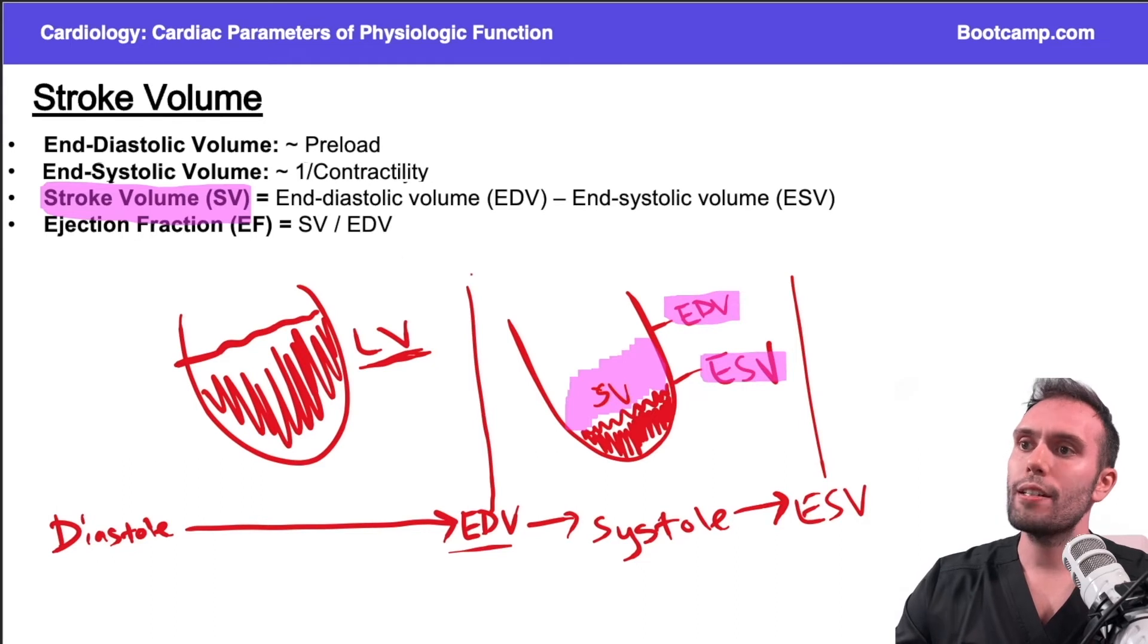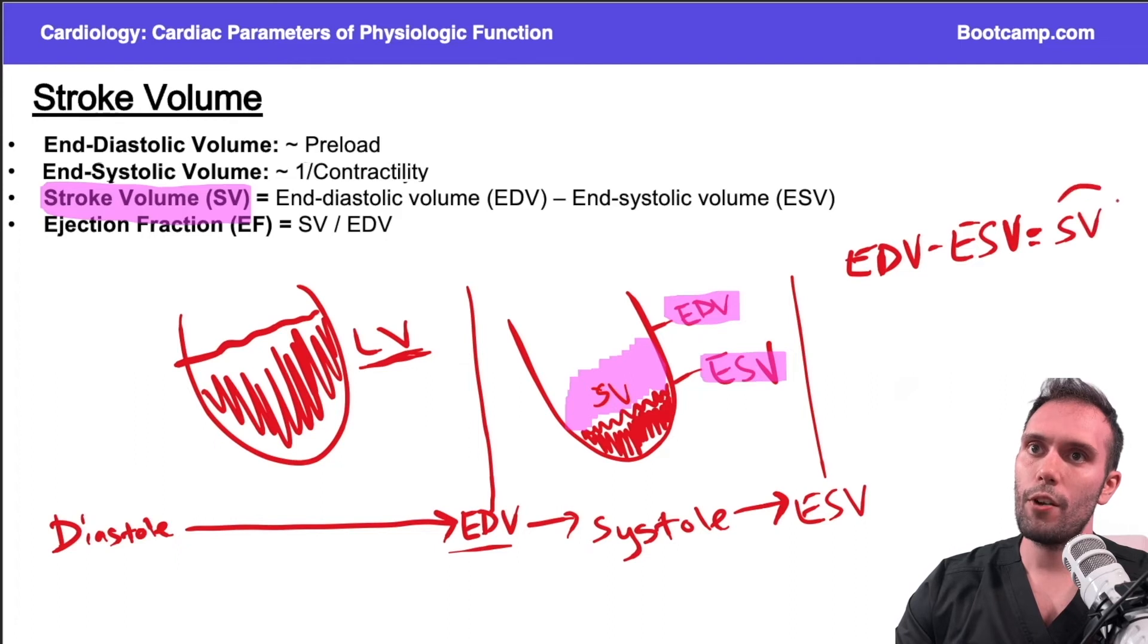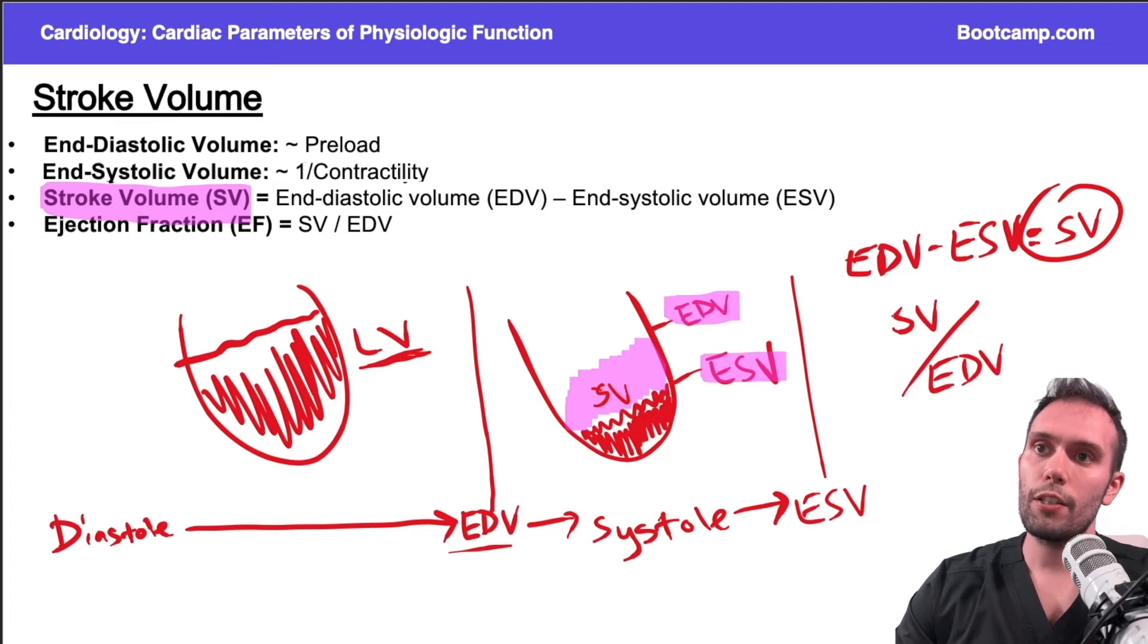Now, if we wanted to figure out what percentage of blood was ejected from what we started with, we would take the blood that we started with, which is the end-diastolic volume, and we would subtract the end-systolic volume. That would get us the stroke volume. This is the amount of blood that we ejected. So we can take the stroke volume, and divide it by the amount of blood that we started with initially, that will tell us the fraction.